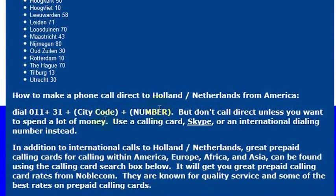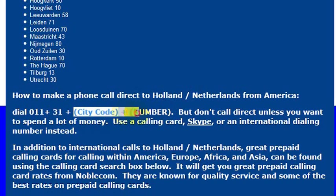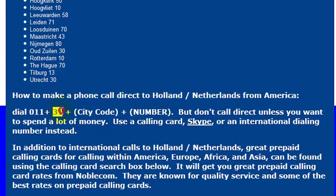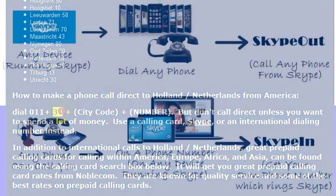To call the Netherlands, simply dial the international dialing code which is 011, then the country code for the Netherlands which is 31, and then dial the phone number that you want to reach. So again, the country code for Holland or the Netherlands is 31.